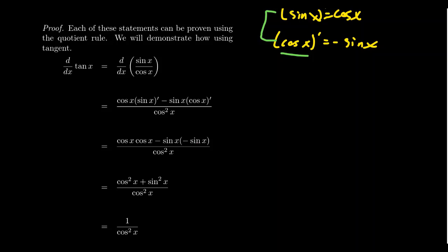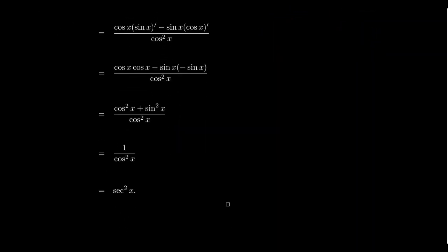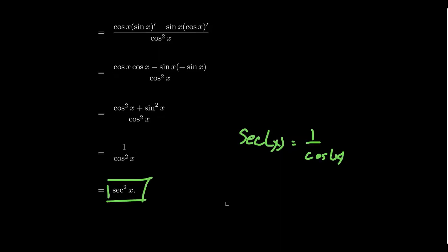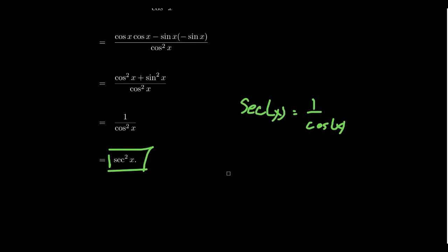We get cosine times cosine which is cosine squared, and then negative sine times negative sine which is a positive sine squared. We arrive upon everyone's favorite trigonometric identity: cosine squared plus sine squared equals one — the Pythagorean identity. So we simplify the numerator to get one over cosine squared. Since secant equals one over cosine, one over cosine squared can be written as secant squared. That gives us the proof that the derivative of tangent is secant squared.